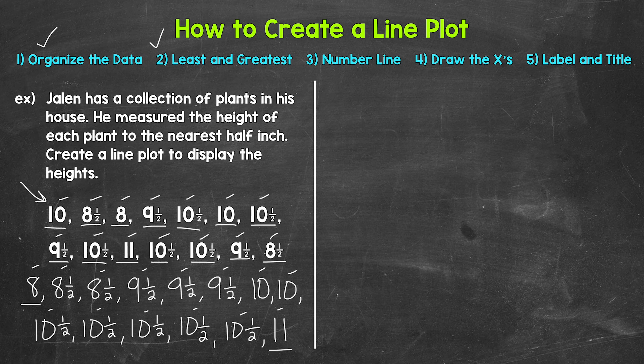Now we need to make our number line. We're going to count up by one half since we have halves involved here. So start the number line with 8 and count up by one half to 11. So let's draw our line here. And we're going to start with the whole numbers: 8, 9, 10, 11.